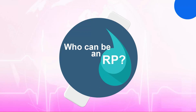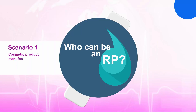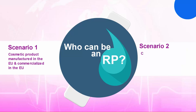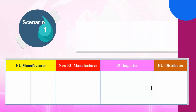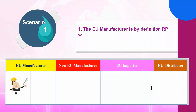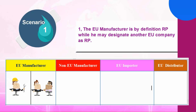Who can be an RP? Let's examine the different options from the two scenarios presented in the law. Scenario 1: a product manufactured in Europe and commercialized in Europe. Points to consider: (1) The EU manufacturer is by definition the RP, while they may designate another EU company as RP. (2) The non-EU manufacturer must designate an EU company as RP.